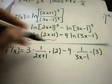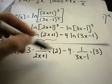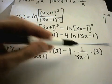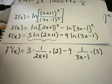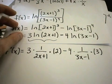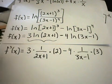So again, you could simplify this down. You'd have a 3 times 2 in the numerator. You'd have 6 over 2x plus 1. Likewise, you'd have 4 times 3, so you'd have negative 12 over 3x minus 1. And again, that would be it. So as far as the derivative part goes, we're now finished.